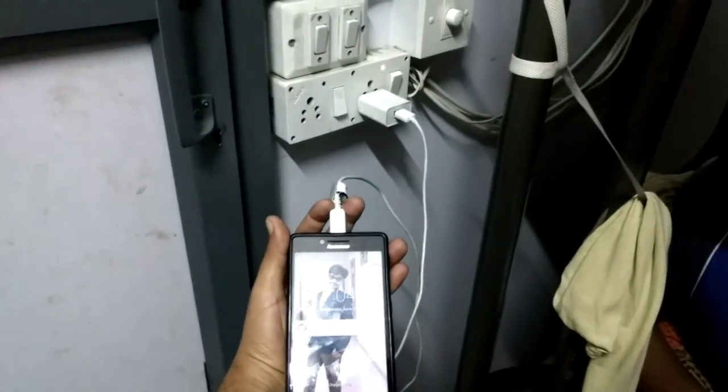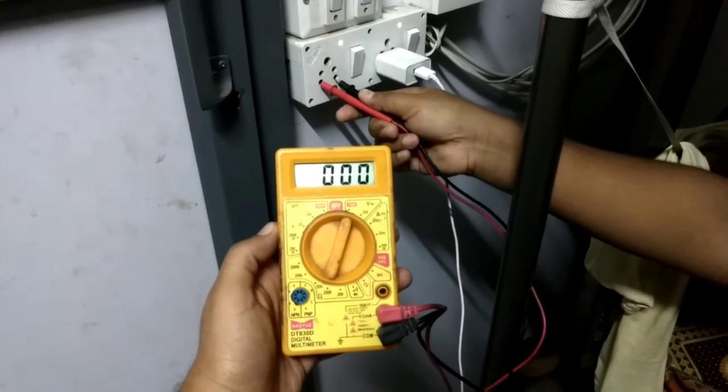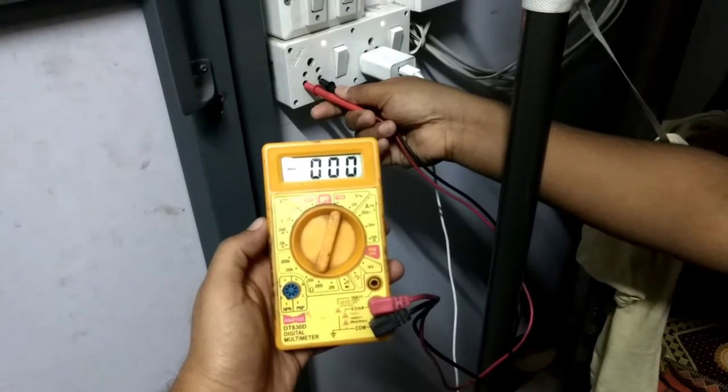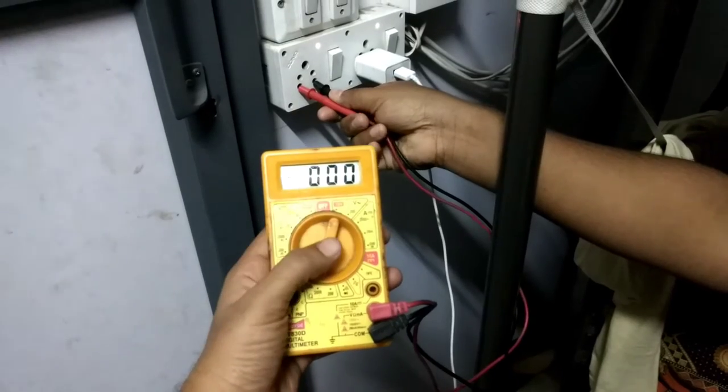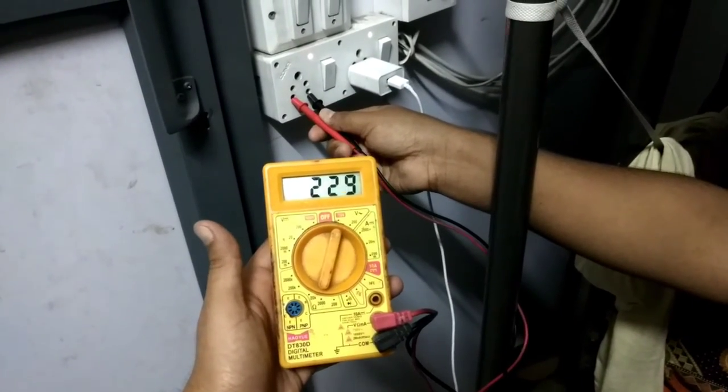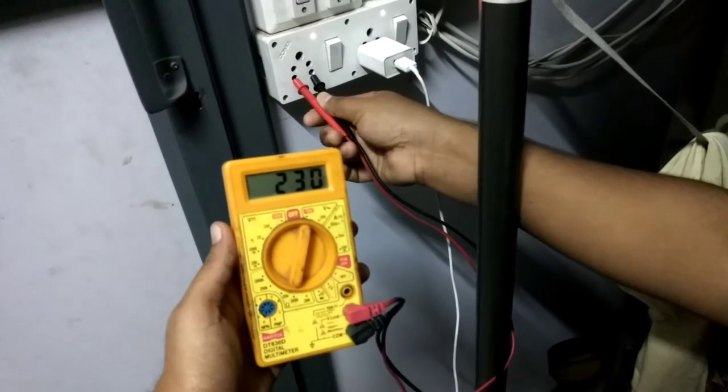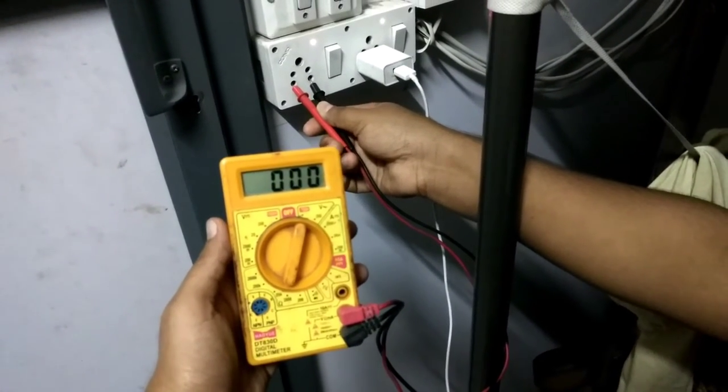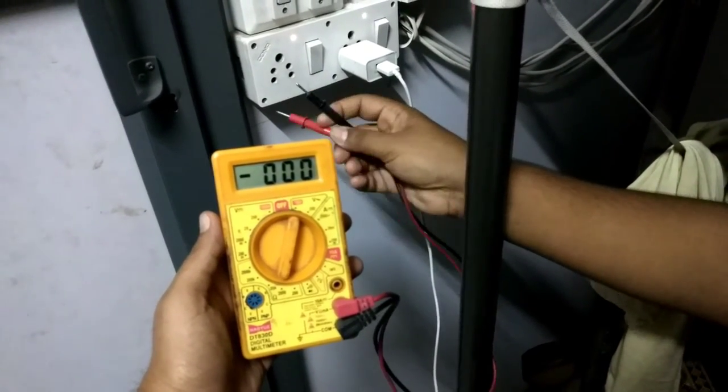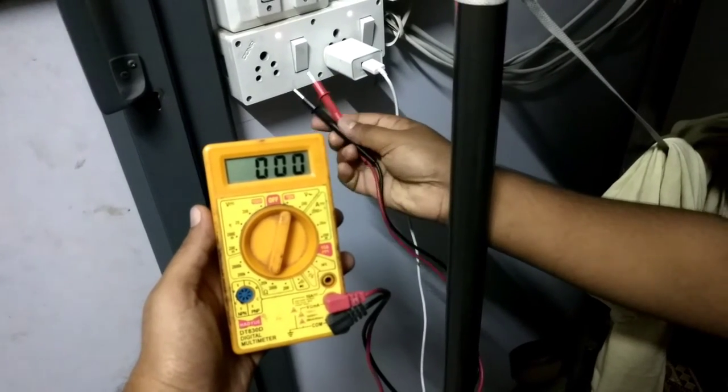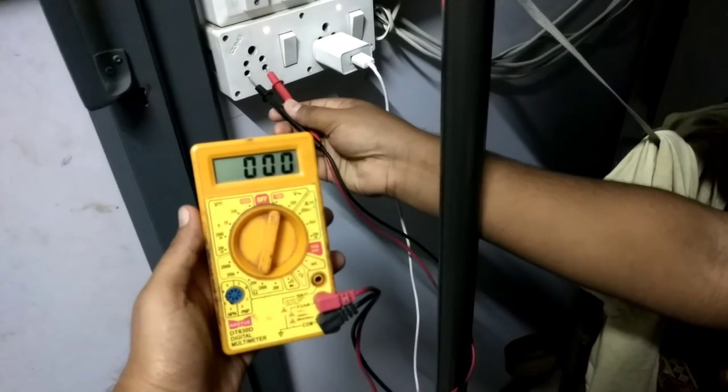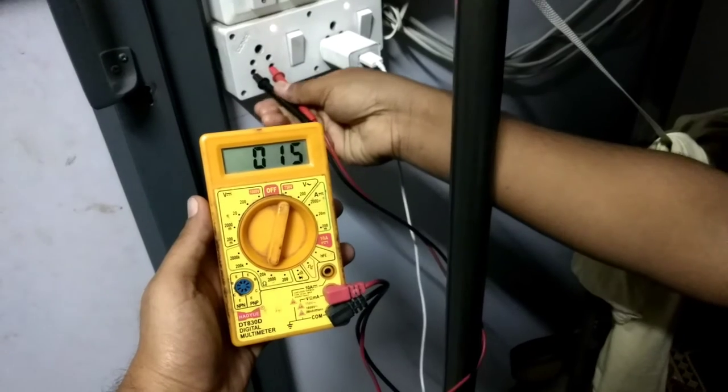Now let's just check the voltage coming out of this port. So according to the voltmeter it's 230 volt here in India. This voltage may vary according to different countries.